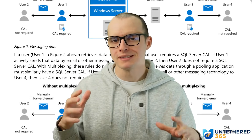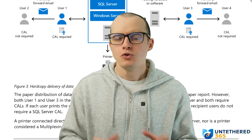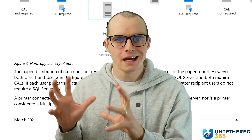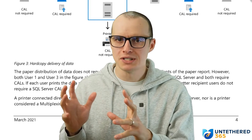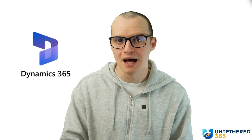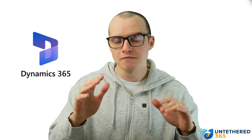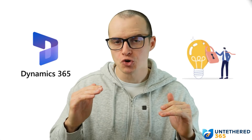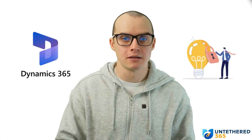If you open the multiplexing PDF, you will see that it can get a little contradictory to what's on the website. That's because the PDF is mostly talking about Dynamics 365, where Microsoft is very strict about their intellectual property.